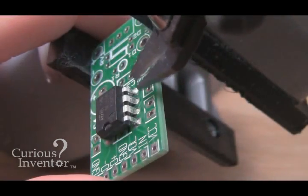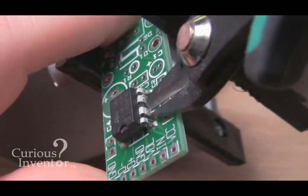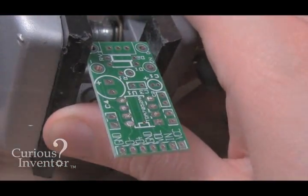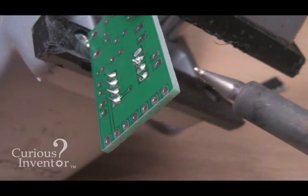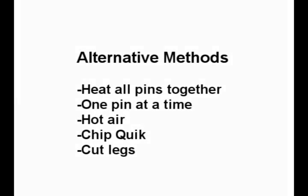If you're willing to sacrifice the part, simply cut each leg, remove the part, and then pull each leg out individually. It's a lot easier to clean a hole that doesn't have a lead in it. Many of these approaches will be faster and pose less risk to the board than trying to desolder each pin individually.